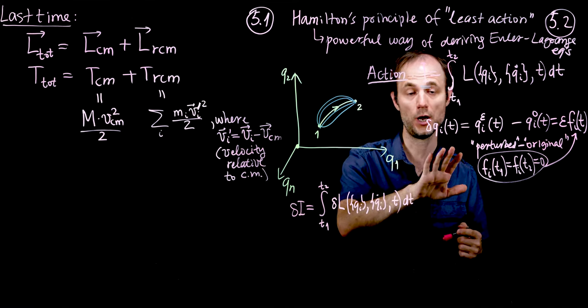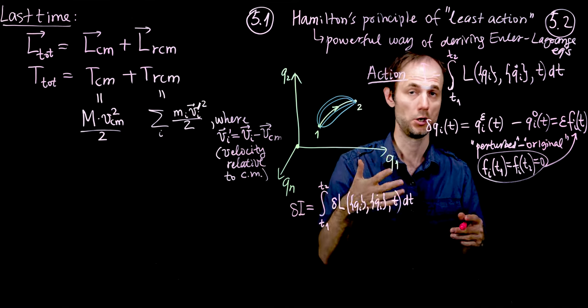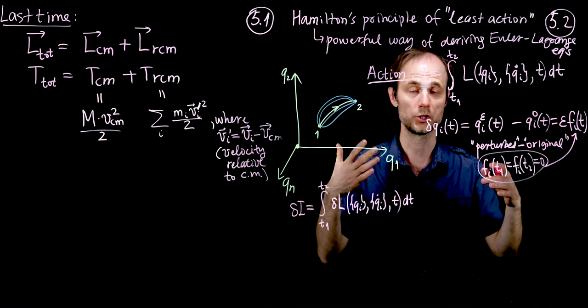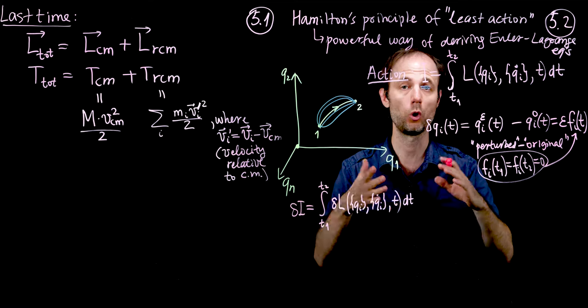Let us set δI equal to zero. Using intuition from derivatives or differentials, we can take the delta inside the integral, so it will be the integral of δL(q_i, q̇_i, t) integrated over time. What can we do with L? We would like to represent the variation of L in terms of variation of q. L depends on q through itself and its derivatives, and we're perturbing all the q_i's. Maybe we can use the chain rule to compute the response of L to the variation in q_i.